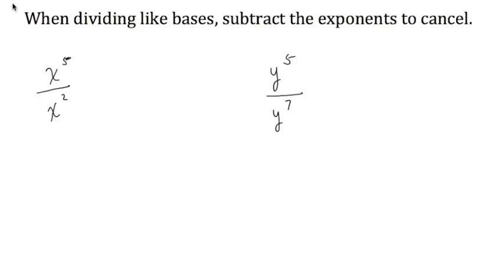In this video, we will explore the rule: when dividing like bases, subtract the exponents to cancel. Let's consider this example first: x to the fifth divided by x squared. This fraction indicates division, so we're dividing x to the fifth by x squared. We're dividing and the bases are alike because both bases are x.